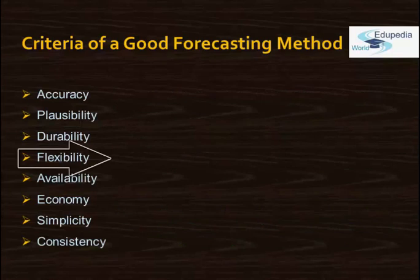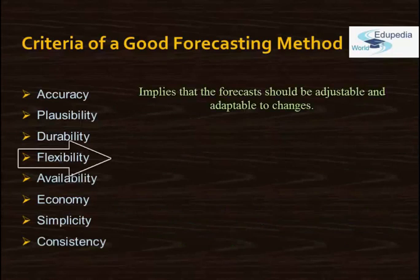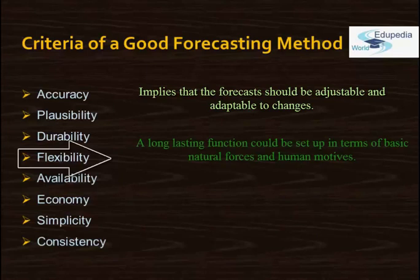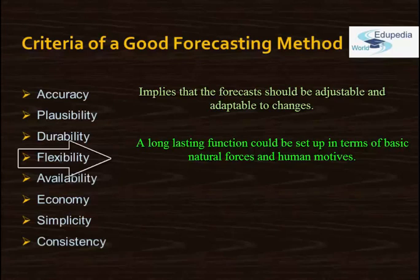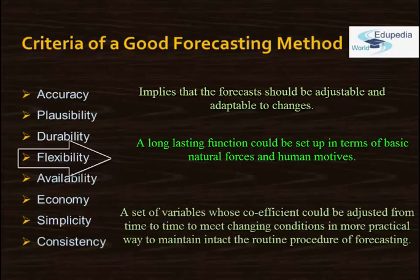Flexibility can be viewed as an alternative to generality. A long-lasting function would be set up in terms of basic natural forces and human motives — although fundamental, it would be hard to measure and thus not very useful. A set of variables whose coefficients could be adjusted from time to time to meet changing conditions is a more practical way to maintain the routine procedure of forecasting.